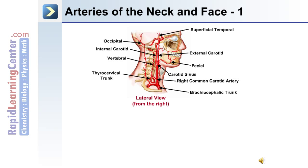This lateral view shows the major arteries of the neck and face region. The brachiocephalic trunk delivers blood into the right common carotid artery. At the carotid sinus, it divides into the internal carotid and the external carotid. From the external carotid, arteries such as the facial artery arise. At the back or posterior side of the skull is the occipital artery, and passing through the vertebra is the vertebral artery.